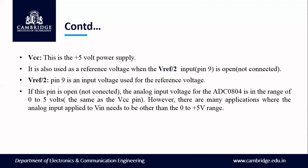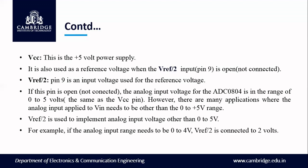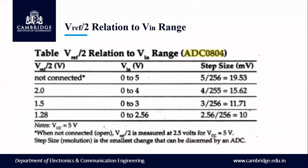If pin 9 is open, the analog input voltage for ADC0804 is in the range of 0 to 5 volts, the same as the VCC pin. However, there are many applications where the analog input applied to VIN needs to be other than 0 to 5 volts — for example, 0 to 4 volts or 0 to 3 volts. In that case, we need to give a different value on pin 9, V-reference by 2, to implement an analog input voltage range other than 0 to 5 volts. For example, if the analog input range is 0 to 4 volts, V-reference by 2 is connected to 2 volts.